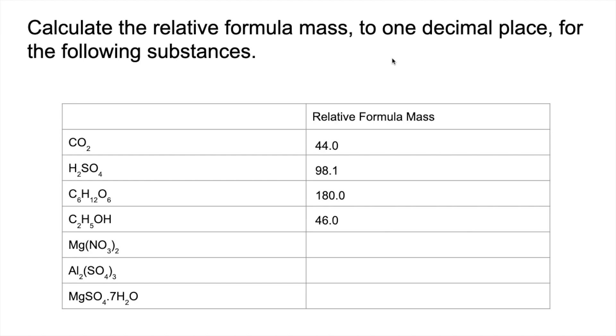Magnesium nitrate, so with this one, remember, you add together the nitrogen and three oxygens and then double them because of the bracket. So that comes out at 148.3.